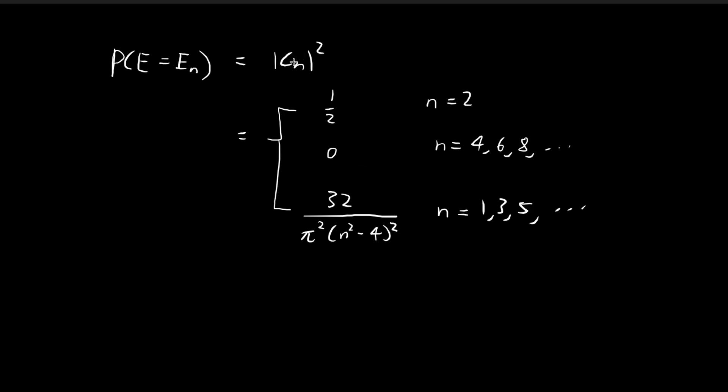In the last video we found the values of Cn which would give us the probabilities of obtaining the different energy levels. Last time we were focused on the most probable energy level, which is the second energy level, the case when n is equal to 2.